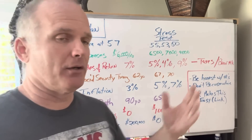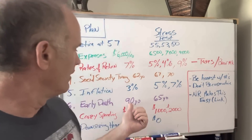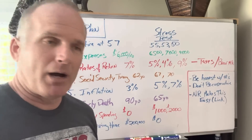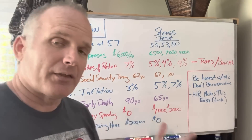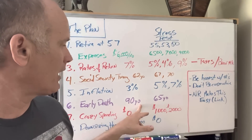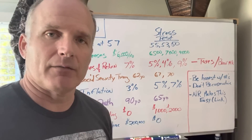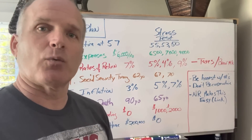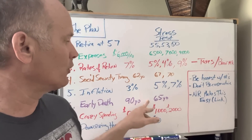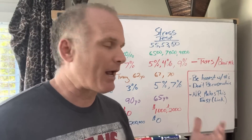Stress testing early death: so many people put in 90 or 95 — I've even had a person put in 100. Everybody's biggest fear is running out of money, but I think regret should be your biggest concern — looking back with regret. What happens if one of you dies at 65? What happens to pensions? What happens to your taxes? What happens to your Social Security? If one dies early, you need to stress test that and make the plan fail.